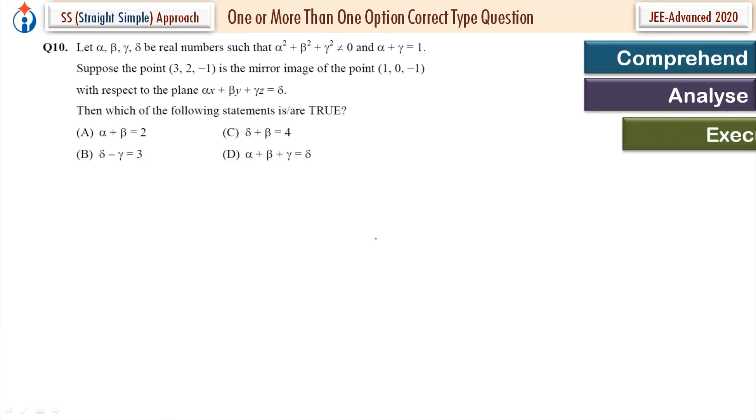Now let's execute. I start the calculation. So midpoint of this and this, I got (2, 1, 1). They satisfy this plane. I just put the value.